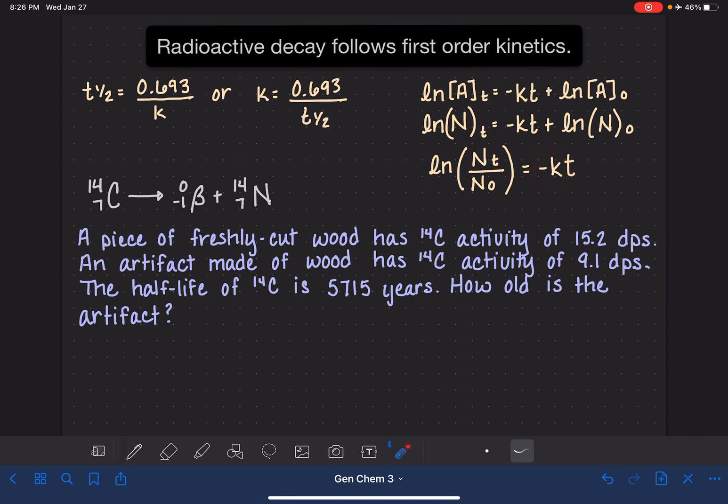Let's start with the rate constant k, because that one's going to be a little bit easier to deal with. We're going to use this equation right here to calculate the rate constant. The rate constant k is 0.693 divided by the half-life, which the problem tells us is 5,715 years.